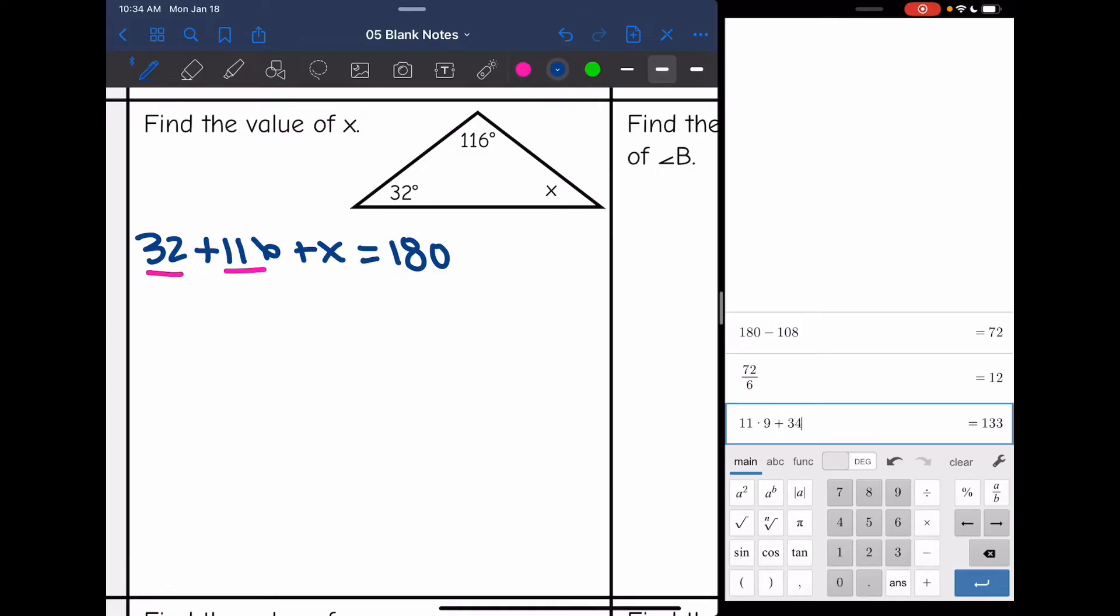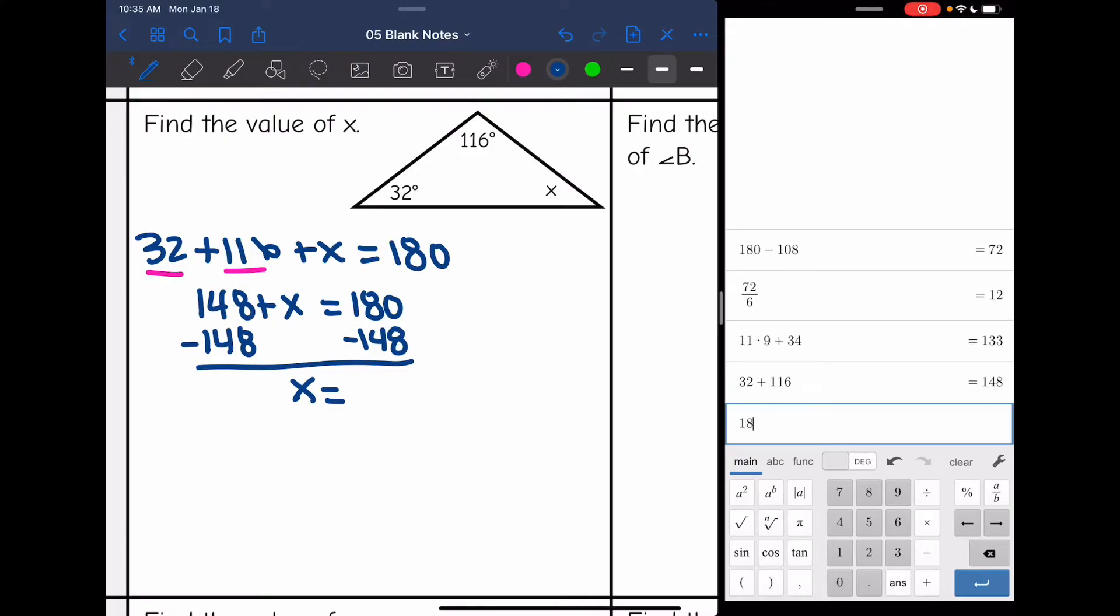I'm going to combine like terms. 32 plus 116 can combine to create 148. So my new simplified equation is 148 plus x equals 180. So I'm going to subtract 148. And that will tell me what x is. So 180 minus 148 is 32. So that missing angle is 32 degrees. And I can double check by adding my three angles together. So we just found that it's 32 degrees. Let's make sure it equals 180. 32 plus 32 plus 116 is 180. So I did this correct.